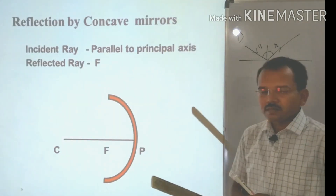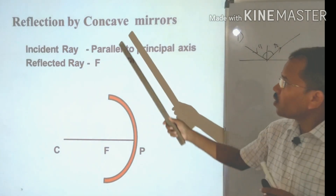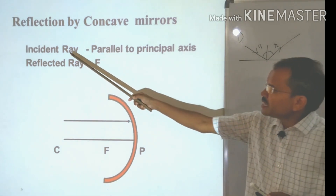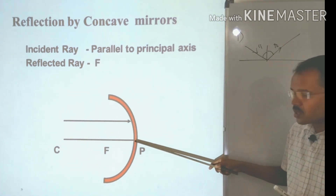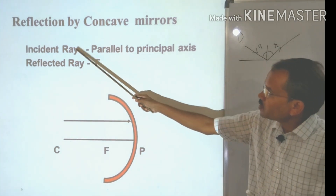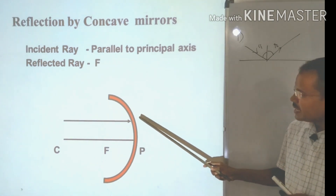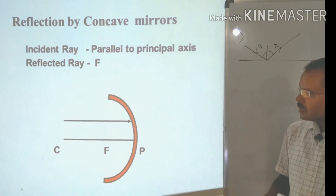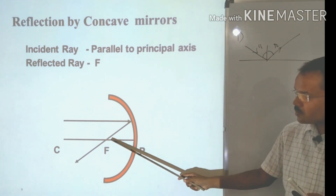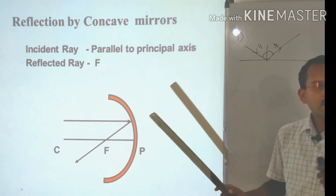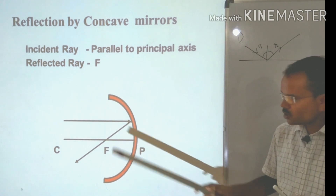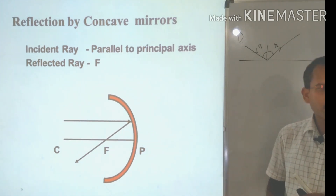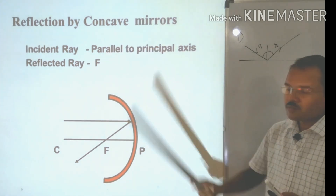Now let us see reflection by concave mirror. We will discuss four different rays. First ray: if the incident ray is parallel to the principal axis, then after reflection it will pass through the focal point F. It cannot reflect anywhere else — it must pass through F. This is the first characteristic of reflection by a concave mirror.